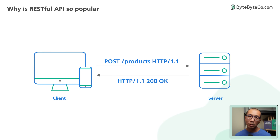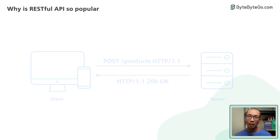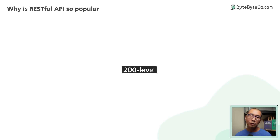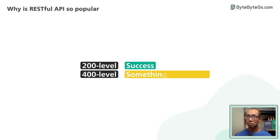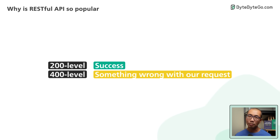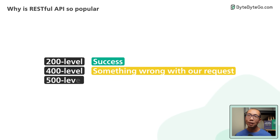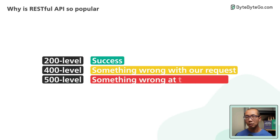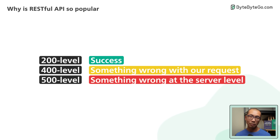A well-implemented RESTful API returns proper HTTP status codes. The 200-level codes mean the request was successful. The 400-level codes mean something was wrong with our request — for example, the request contained incorrect syntax. At the 500-level, it means something went wrong at the server level, such as the service being unavailable.